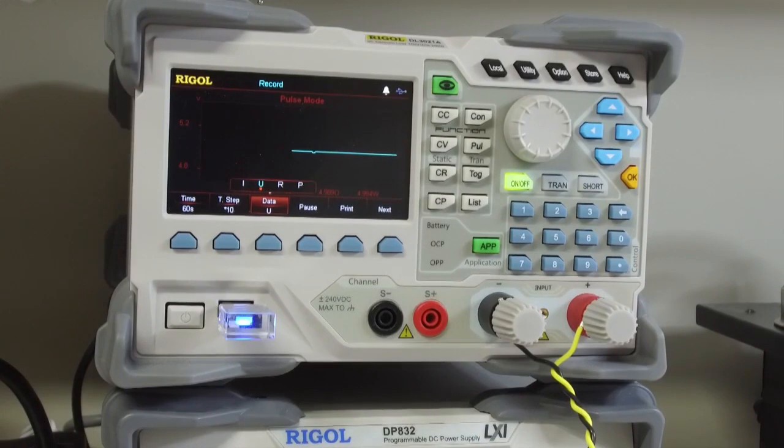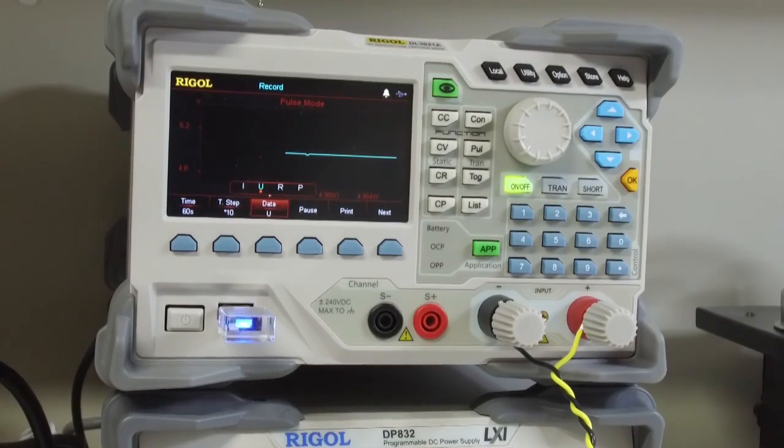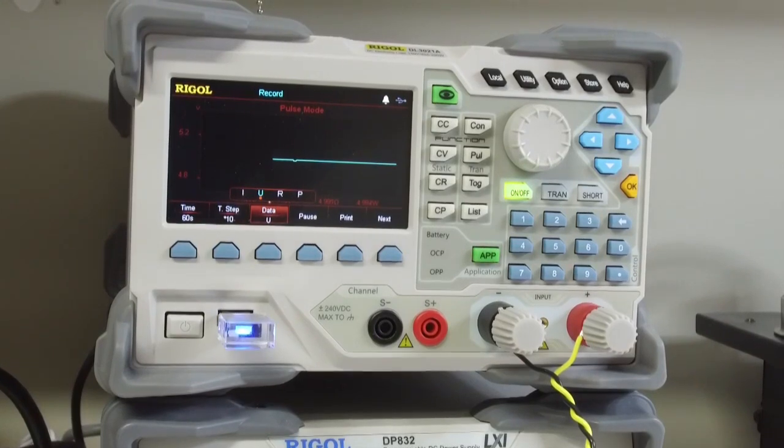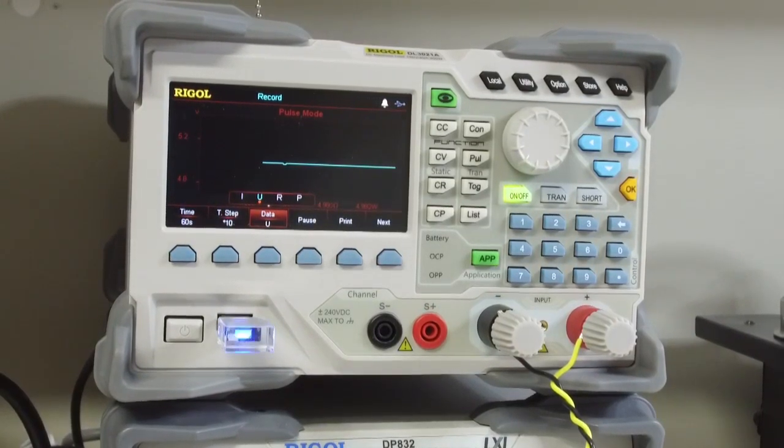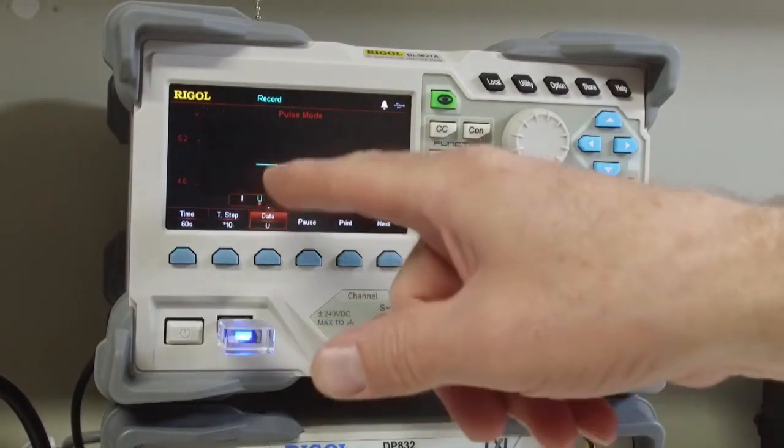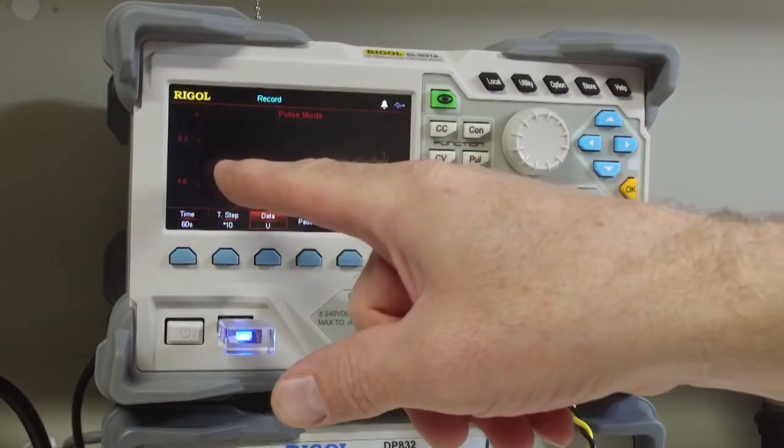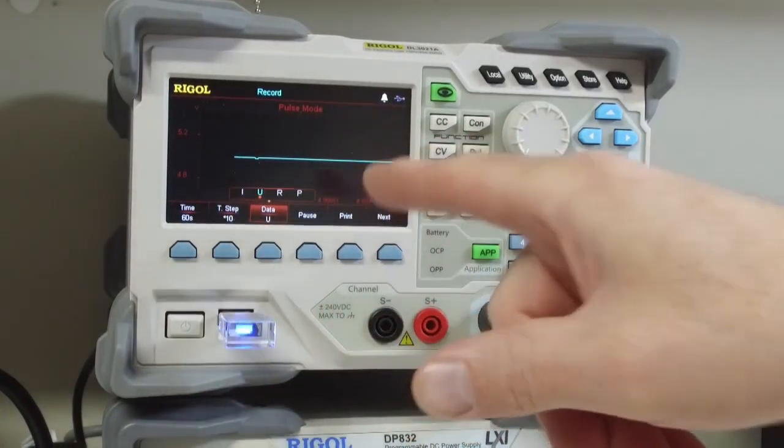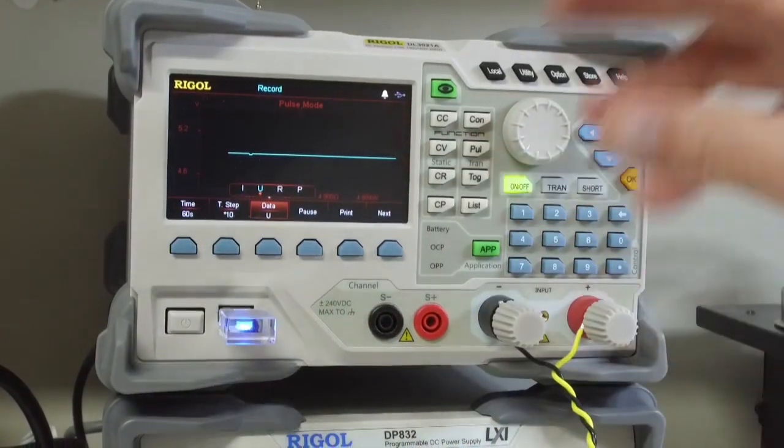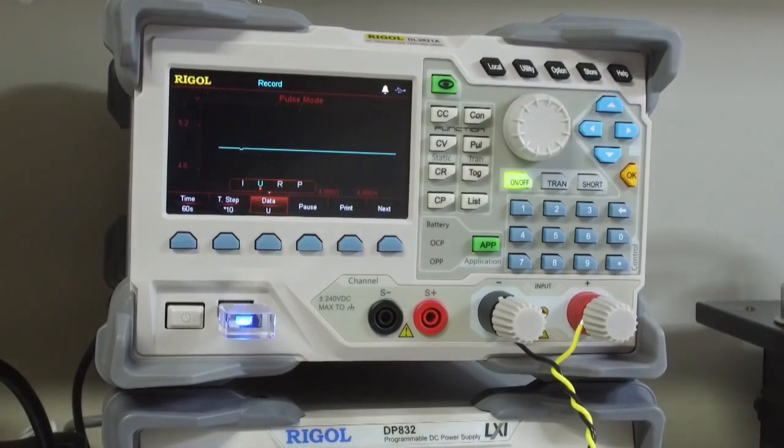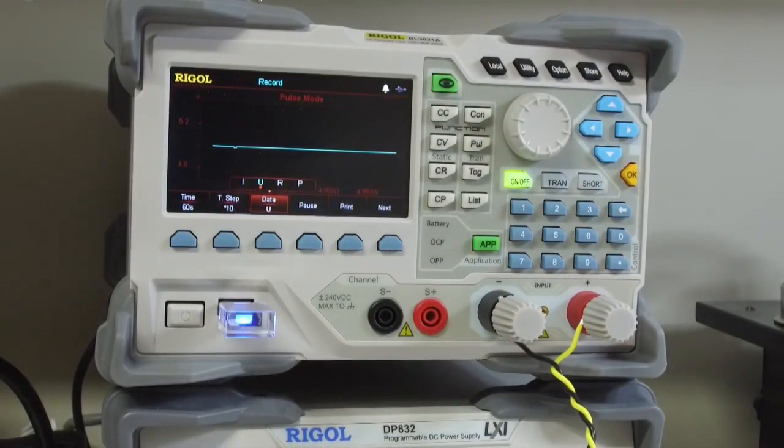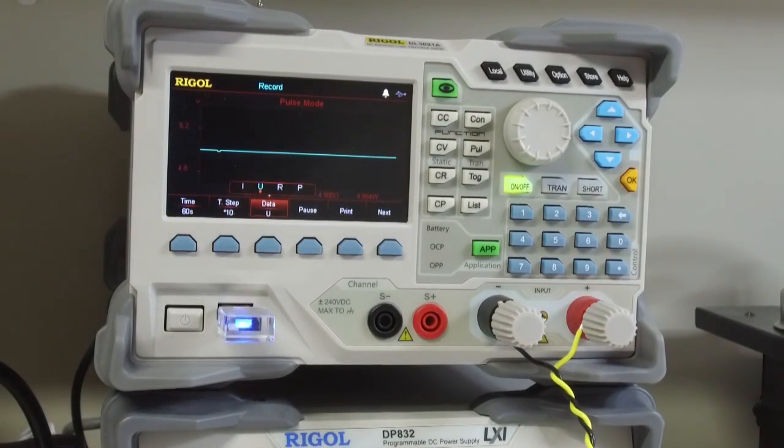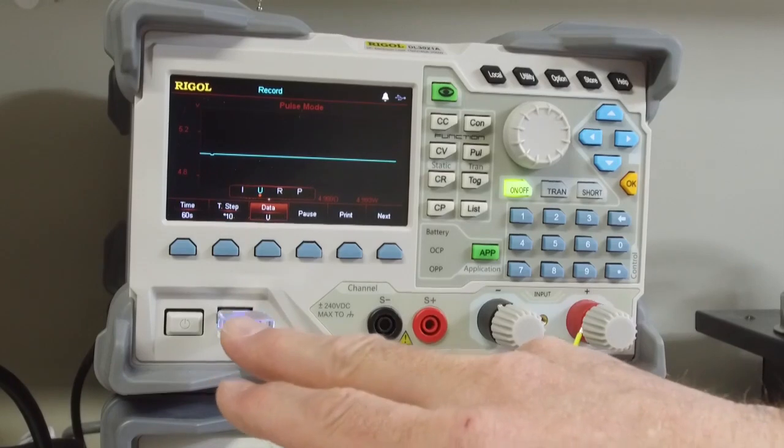However, the sampling rate that's logging to the USB thumb drive is not fixed. And I think this might be a little bit of a bug. It basically takes the screen width, does some math that I haven't been able to figure out. And your sample rate might be 2, 3, 4, maybe up to 10 samples per second to the thumb drive.